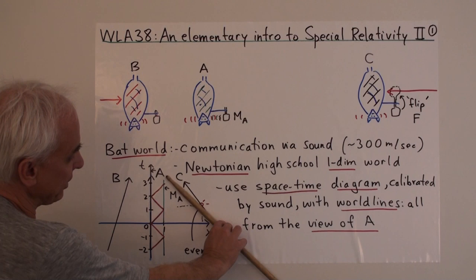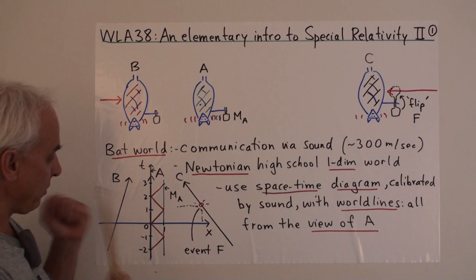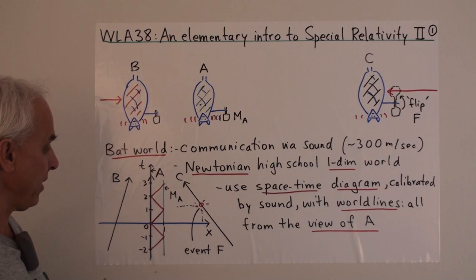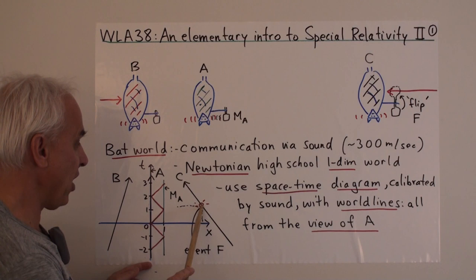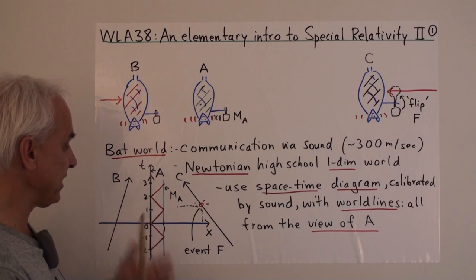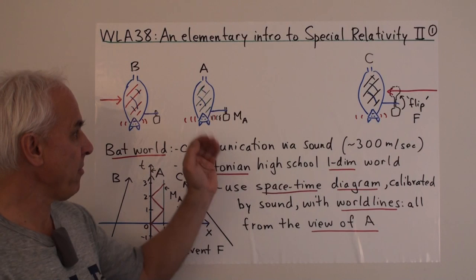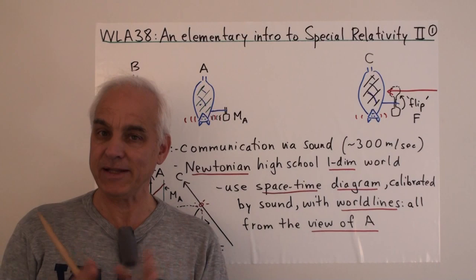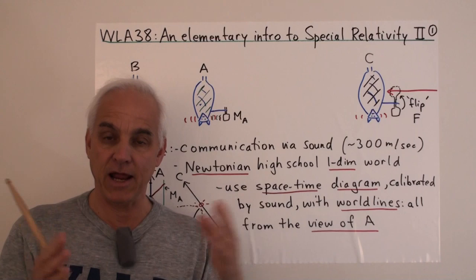Now we'll suppose we're interested in a particular event — for example, at a certain point, let's say that C flips his mirror. We can register that from A by sending a sound wave from A, bouncing off of C exactly when he's flipping the mirror and then coming back. That was the system we used to coordinate our space-time from A's point of view. So what we're going to do today is look at things not just from A's point of view but also from B's point of view, and look carefully at the relationship between these two different ways of understanding this one-dimensional world in which they live.